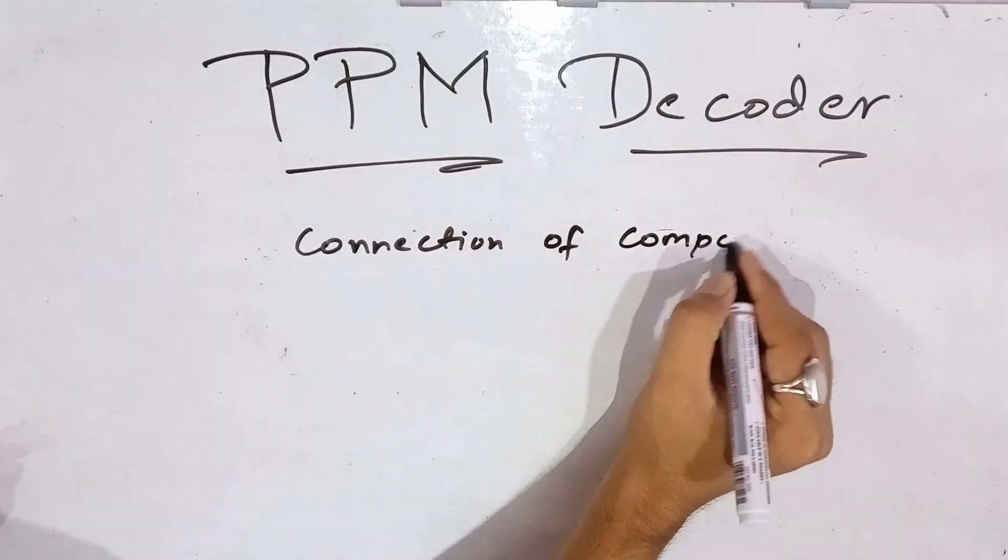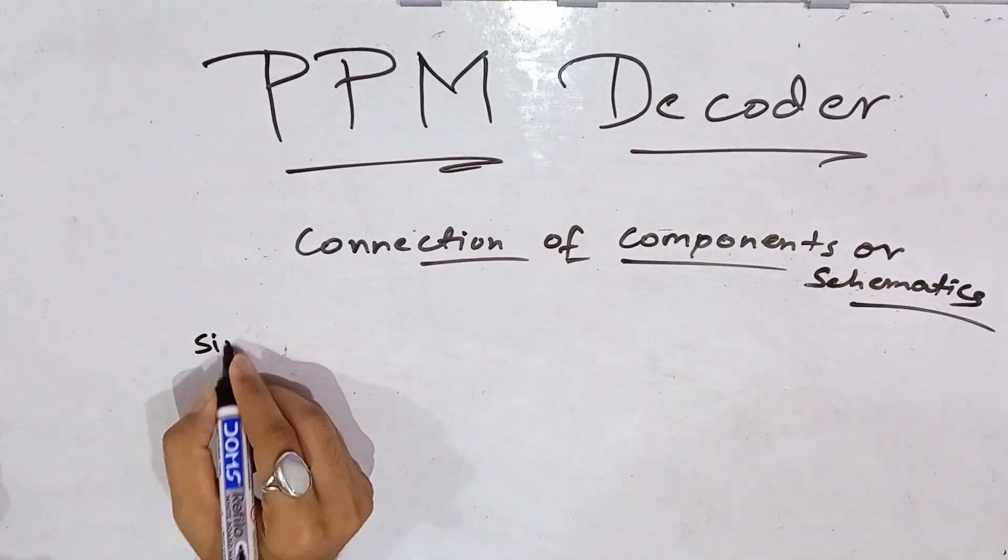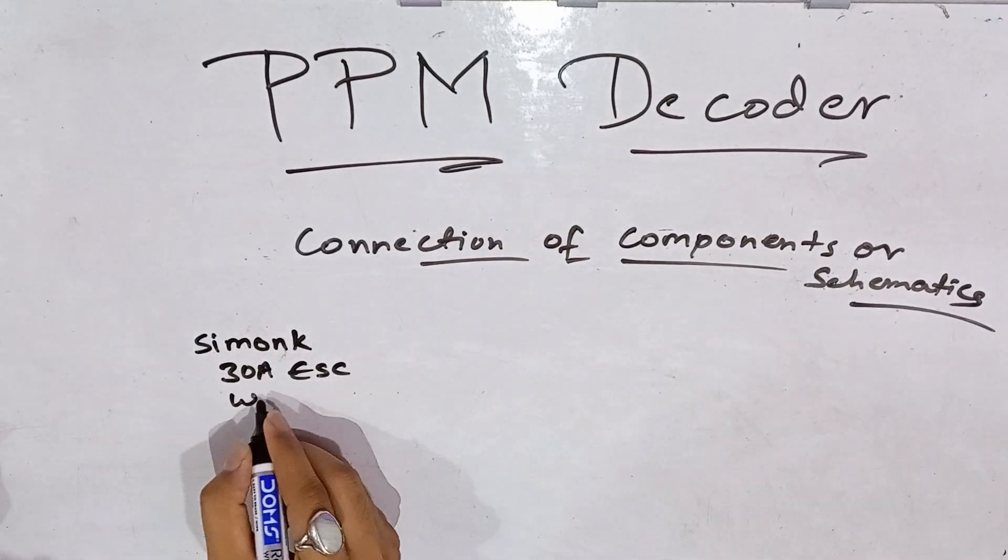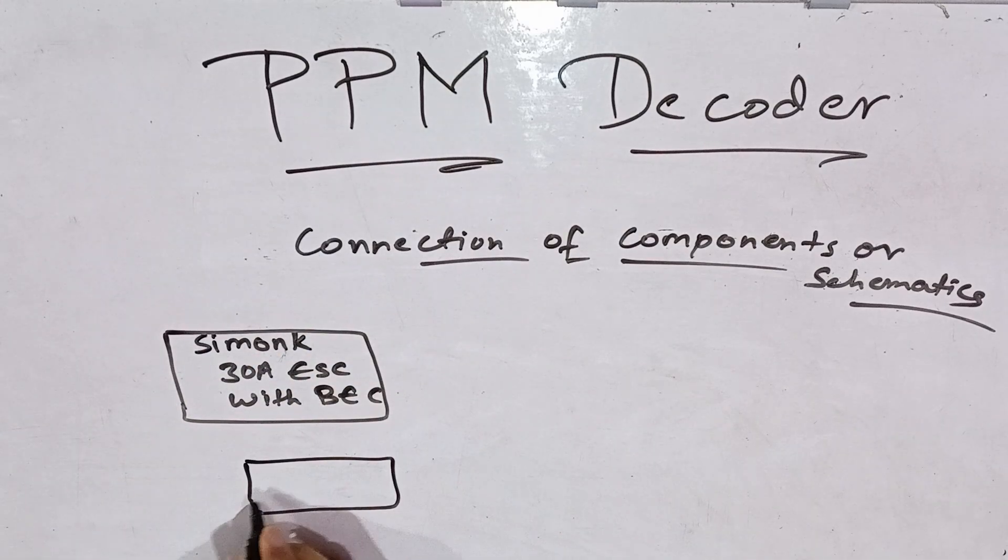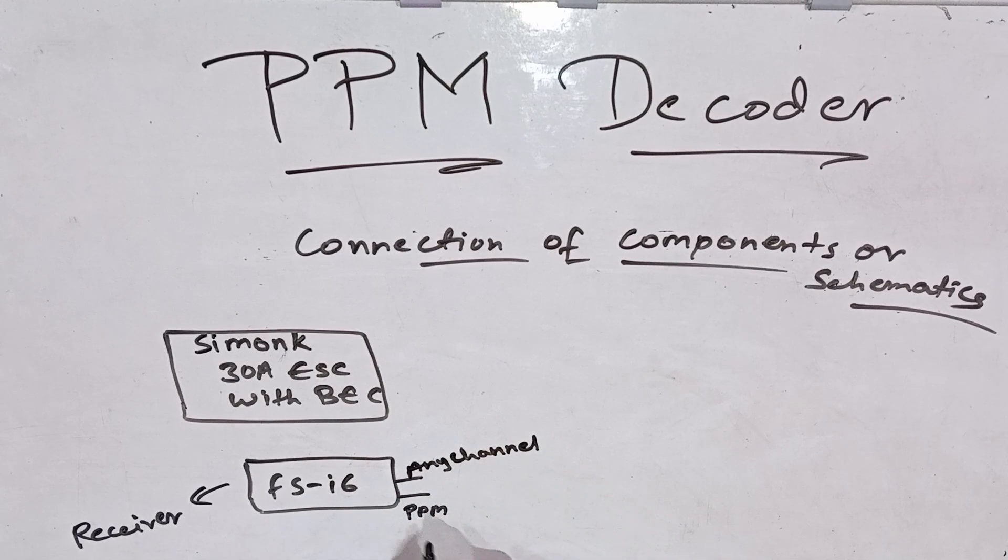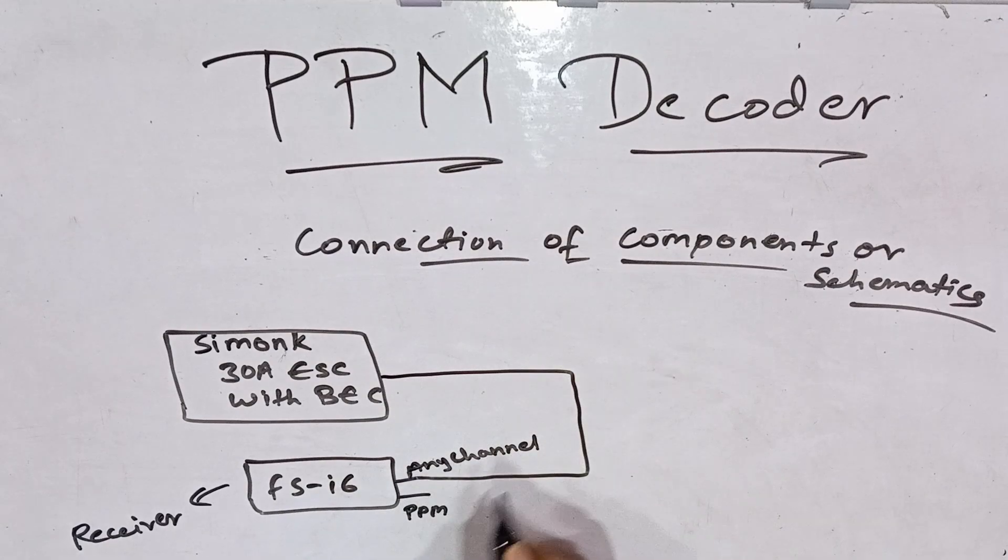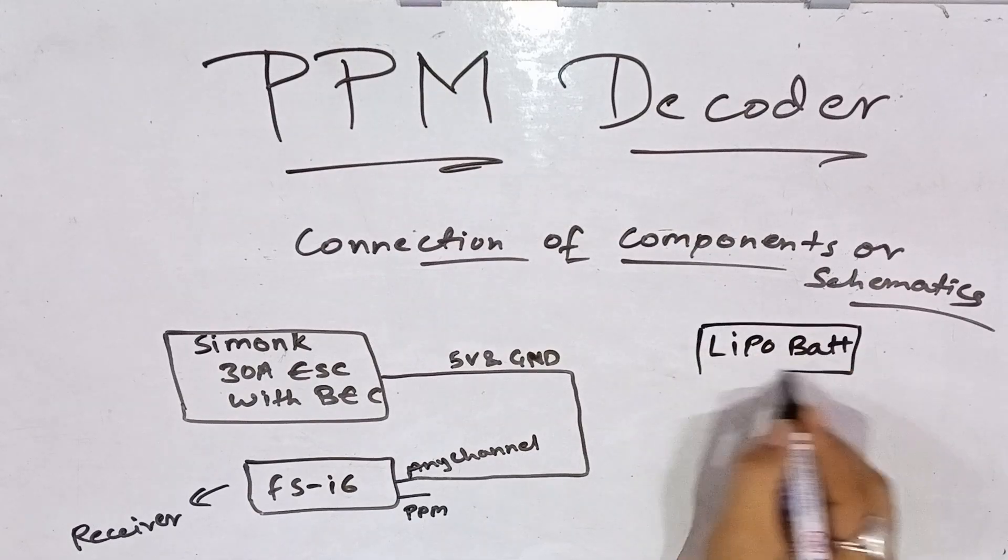Let's talk about the component connections. We have a Simon 30 ampere ESC with a BEC. It outputs 5 volts, 2 amperes roughly. We have our FSi6 AB receiver, so we'll be connecting this BEC output directly to FSi6 RC3 channel. You can use any channel, channel 3, channel 4, whatever you prefer. Next we have a LiPo battery and we'll be connecting it to our PDB or power distribution board.